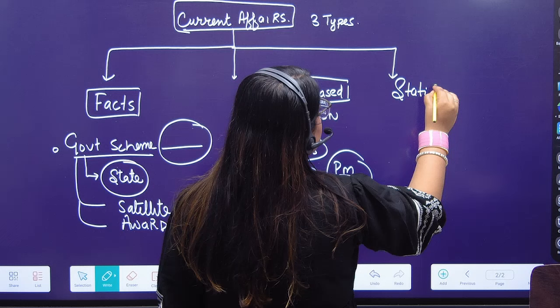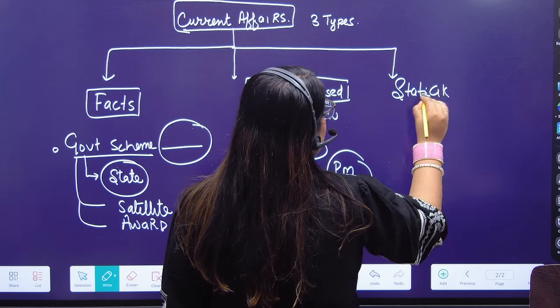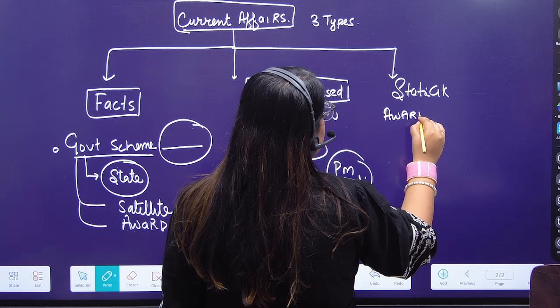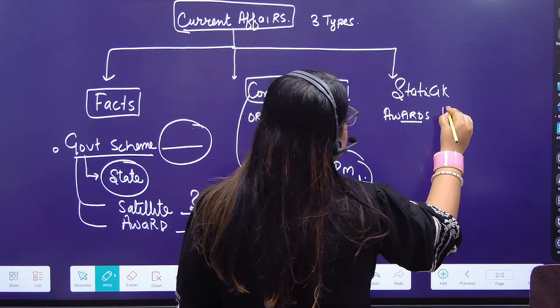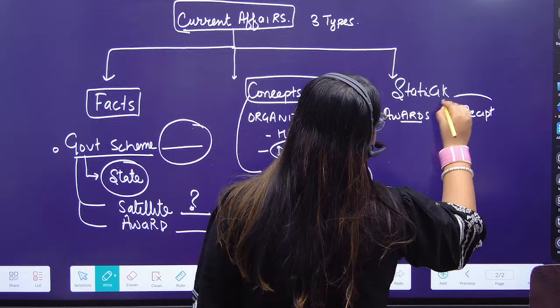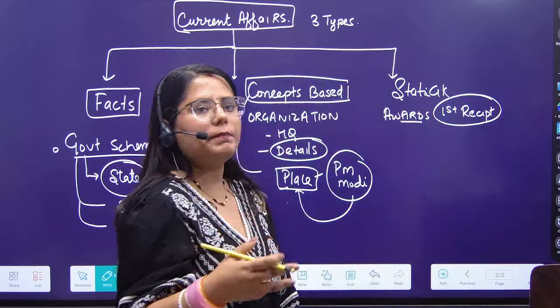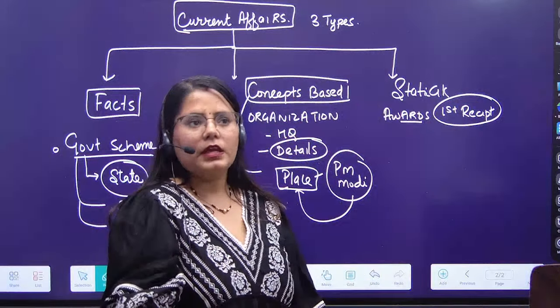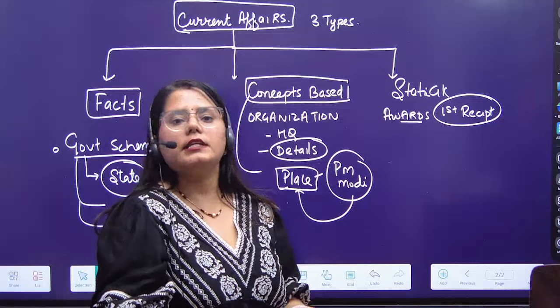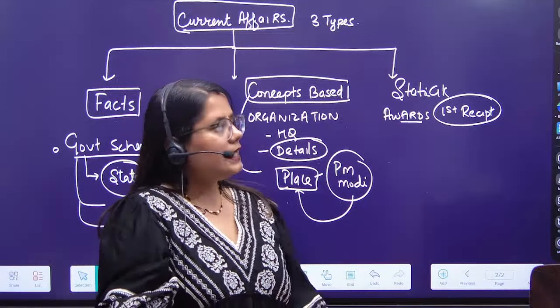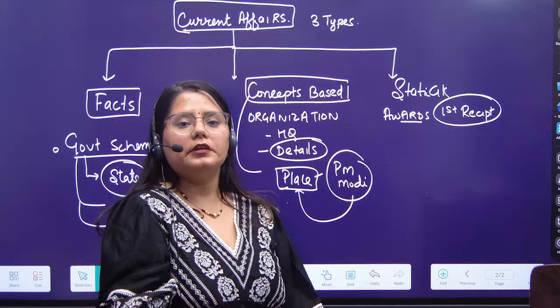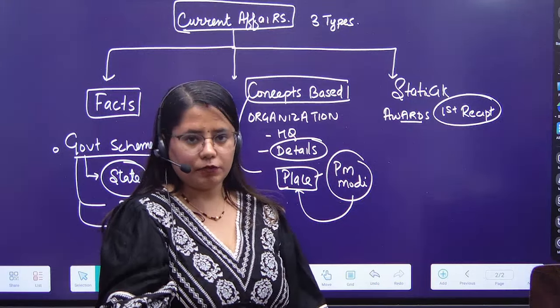Third type of question is static GK based. Suppose if there is news about awards, then the first recipient will be asked. If there is a Nobel Prize, the first recipient will be asked, or if there is a player, then the state will be asked. There are three types mainly of current affairs questions.